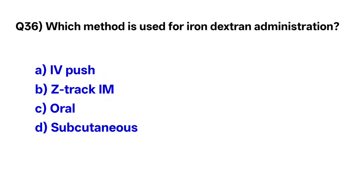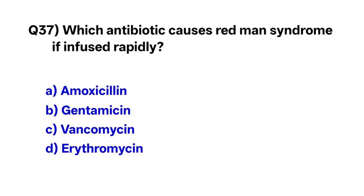Question number thirty-six: Which method is used for iron dextran administration? The correct option is B, Z-track intramuscular. Question number thirty-seven: Which antibiotic causes red man syndrome if infused rapidly? The correct option is C, vancomycin.